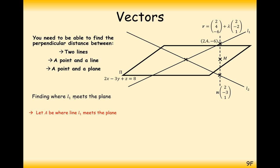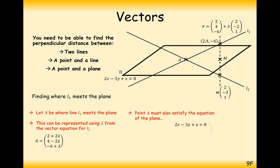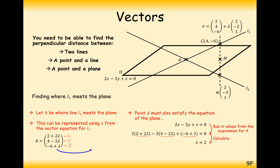Let's find out first where L1 meets the plane. We substitute the equation of the line into the equation of the plane. Rearranging the line into a single vector gives: (2 + 2λ, 4 - 2λ, -6 + λ). We substitute the x, y, and z coordinates into the plane equation and solve to get λ = 2. So point A is at (6, 0, -4). We've got one of our two coordinates needed to find the equation of the line.